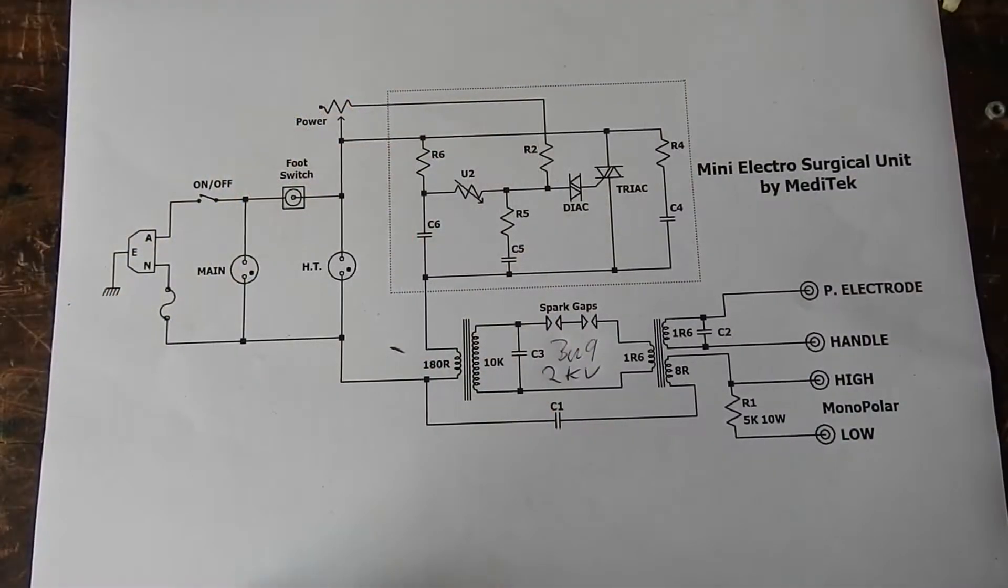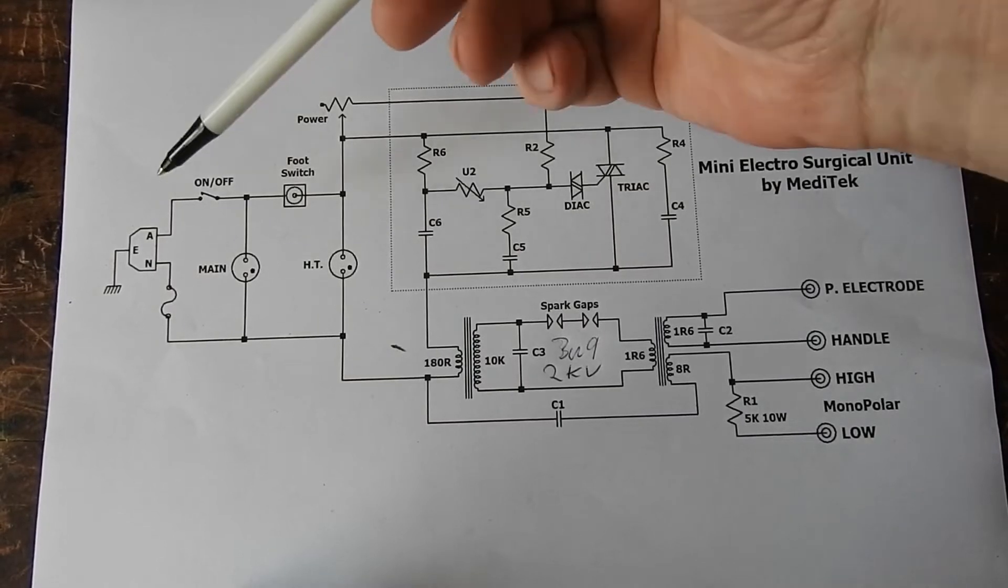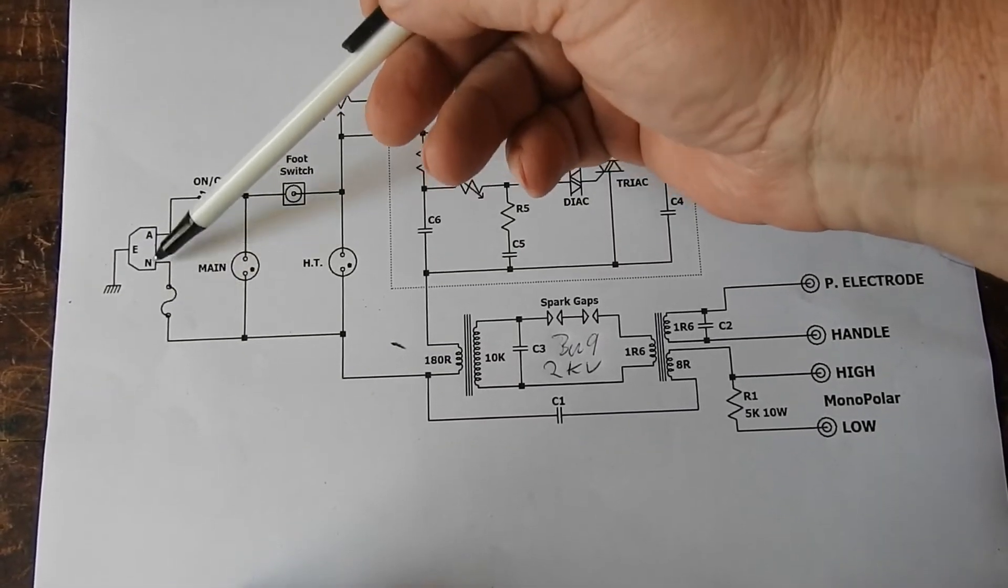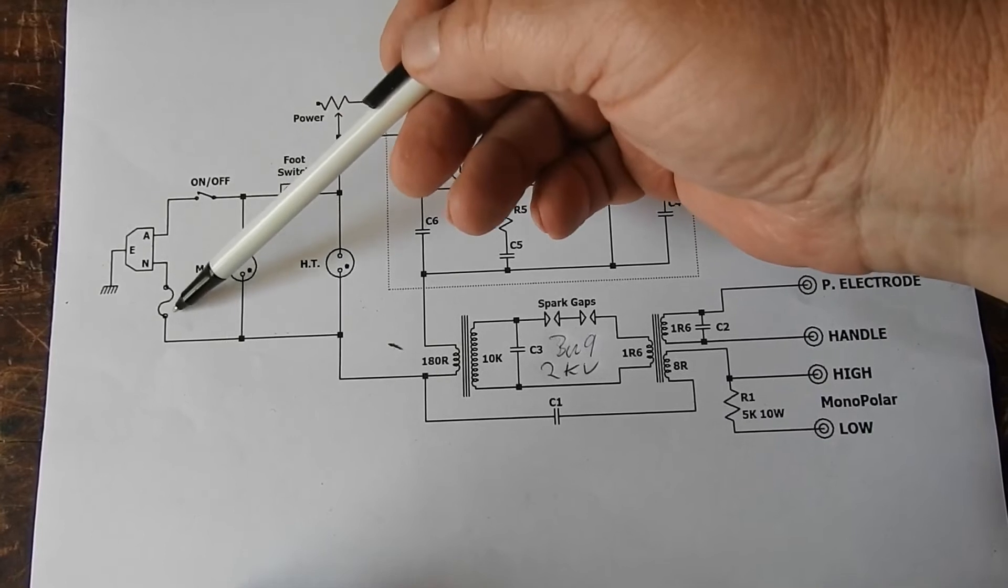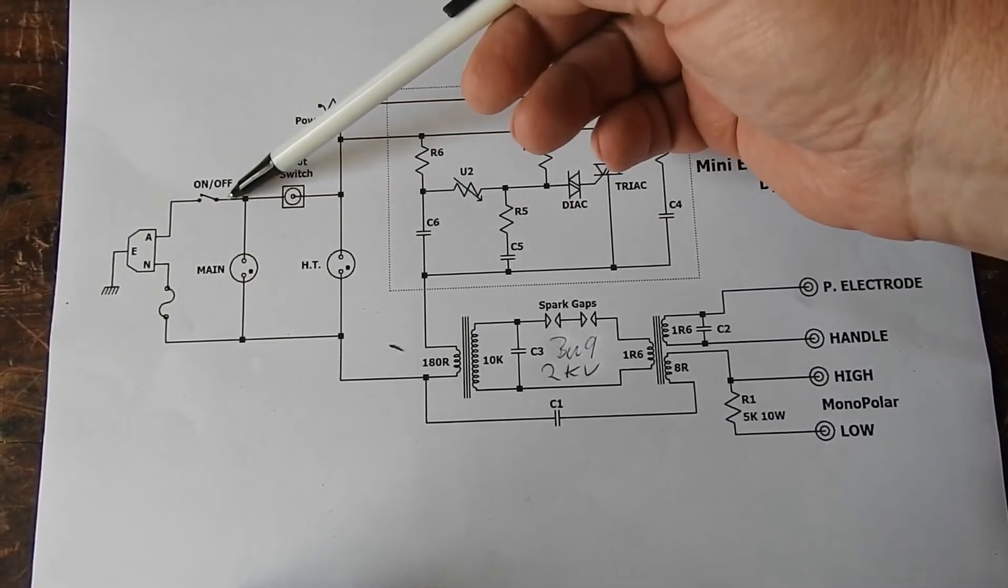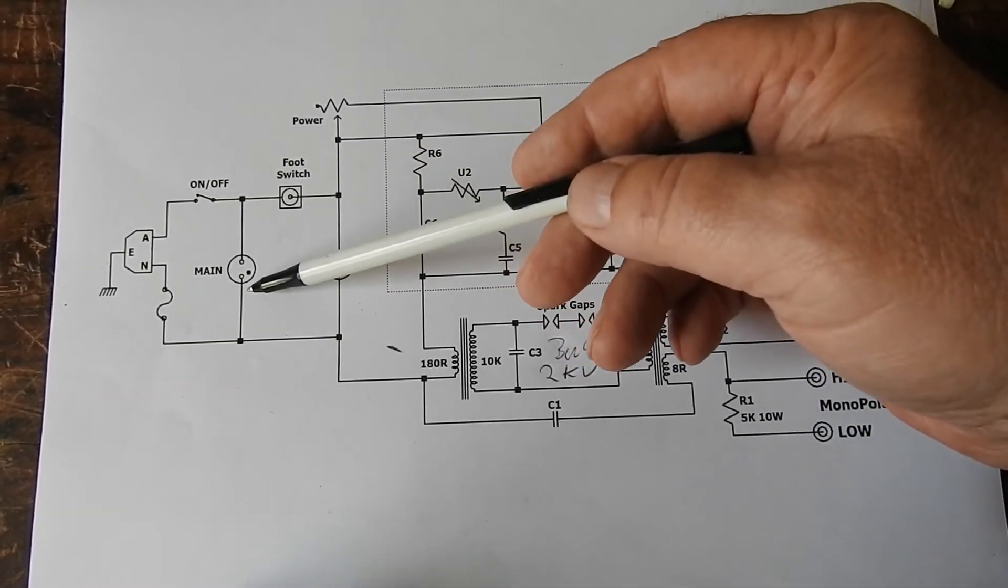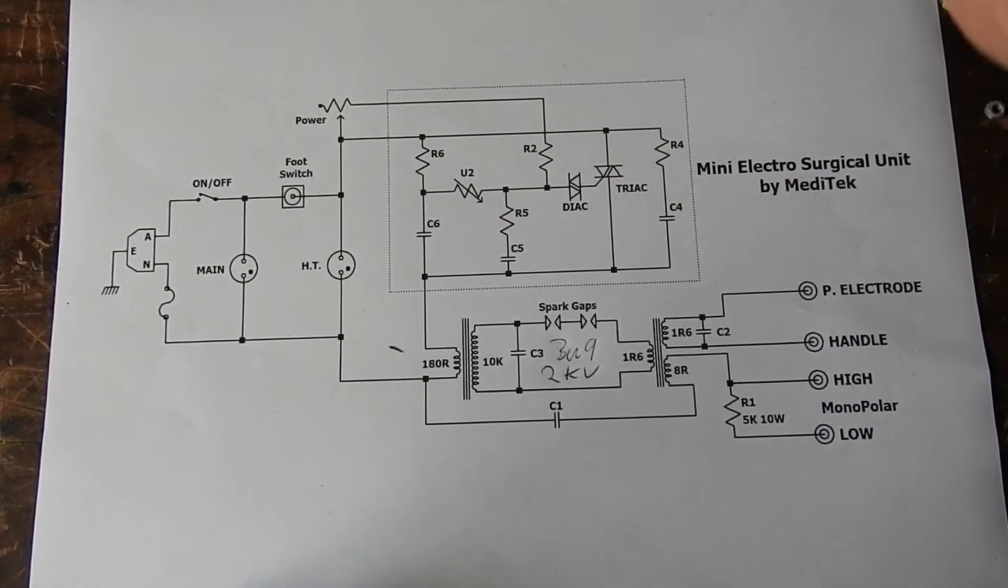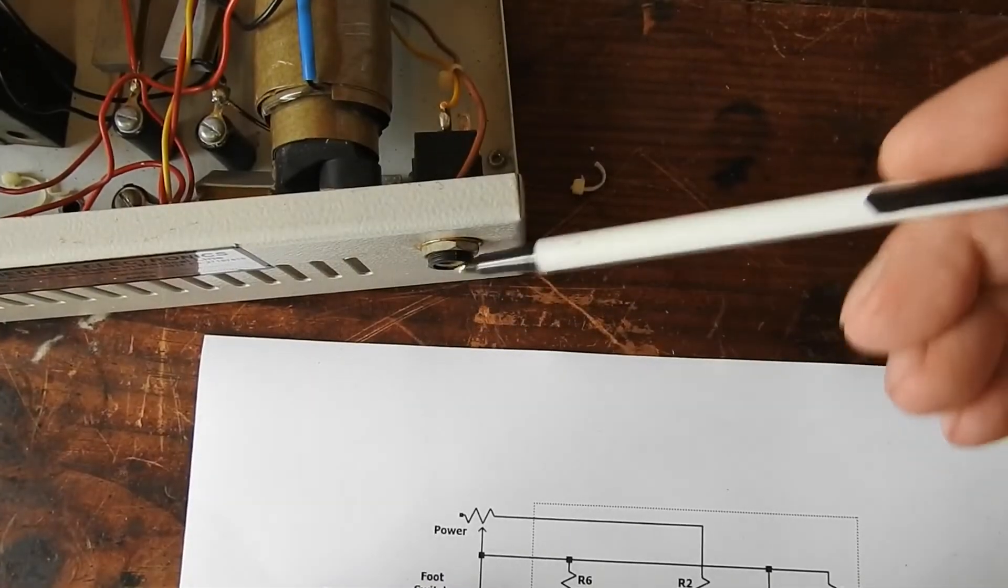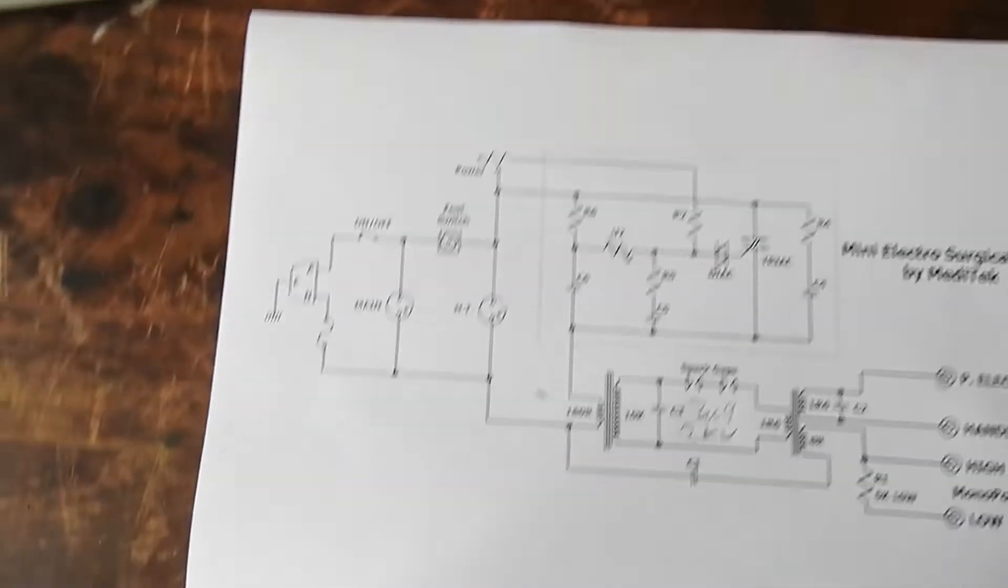Here's the circuit. So power comes in. They fuse the neutral, not the active, which is a bit dodgy. Switch goes there, the main switch, which then illuminates a neon bulb to say power's on.